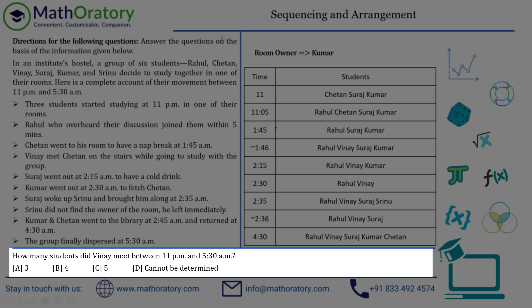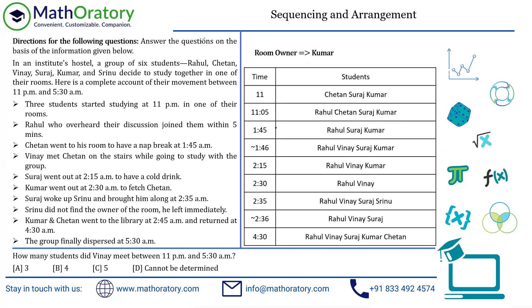Here we're looking for how many students Vinay met between 11pm and 5:30am. Looking at every time block where Vinay is present: Rahul — met; Suraj — met; Kumar — met; Srinu — met at 2:35am; and Chetan is also met by Vinay at 4:30am. So every other person has been met by Vinay. Since there are six students, Vinay can meet five people only — and he has met all five. The answer is option C. This was the last question.